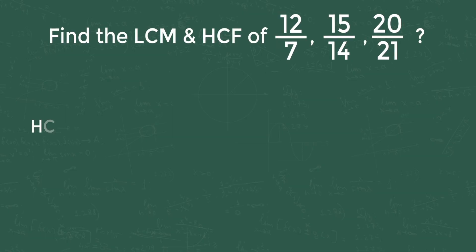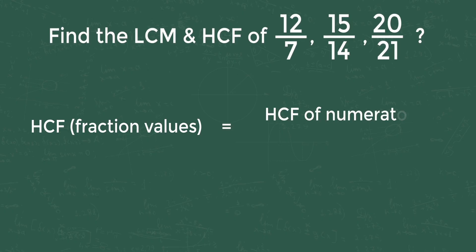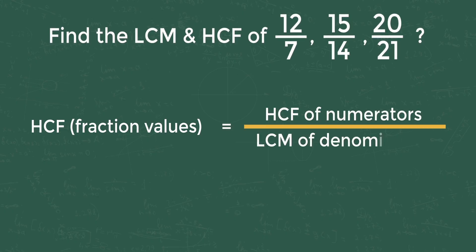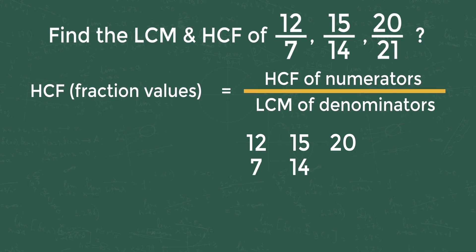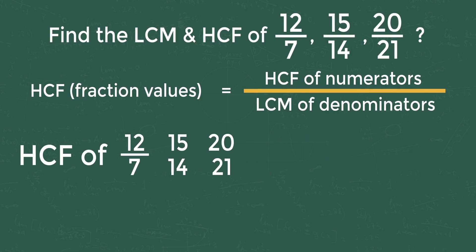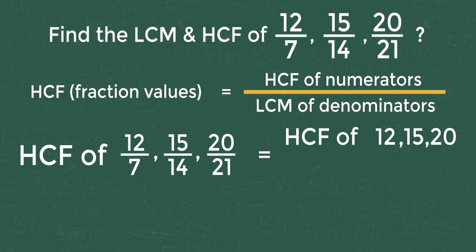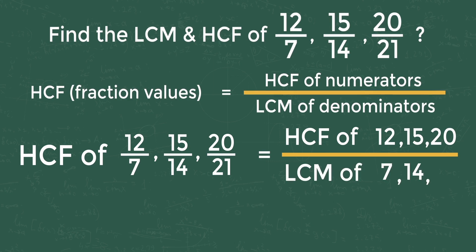To find the HCF, we use this formula: HCF of fraction values equals HCF of numerators divided by LCM of denominators. In our problem, the numerators are 12, 15, 20 and the denominators are 7, 14, and 21. So HCF of 12/7, 15/14, 20/21 equals HCF of 12, 15, 20 divided by LCM of 7, 14, 21.